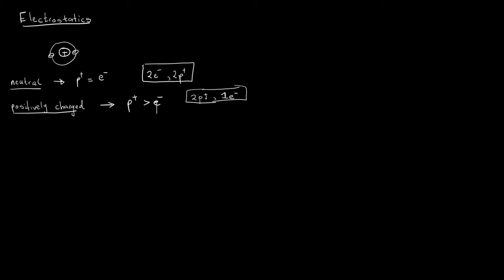That atom is positively charged because it has more protons than electrons. An atom can also be negatively charged, which simply means there are more electrons than protons — for example, three electrons and two protons, so there are more electrons than protons, hence it is negatively charged.